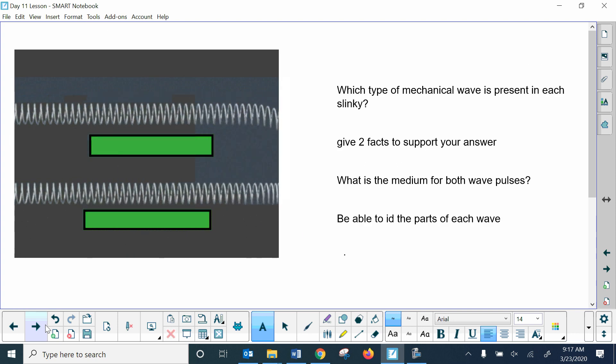So I was going to ask you some questions. You can think about these as we talk through them. Which type of mechanical wave is present in each slinky? You've got a GIF of the slinky waves, and you've got to decide which one you think is transverse and which one you think is longitudinal, and that should be pretty easy based on the image and the pictures that we've seen. I want you to think about that and be able to give two facts that would help support your answer.